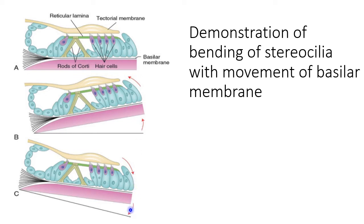The exactly opposite happens when the basilar membrane moves downwards. Because of the downward movement of the basilar membrane, the hair cells and stereocilia return to the normal position, and the cells get hyperpolarized — nerve signals stop. This way, the bending of stereocilia caused by the upward and downward movement of the basilar membrane is responsible for the nerve signal passing through the afferent nerve, which is the cochlear division of the eighth cranial nerve.